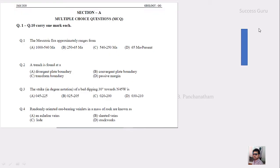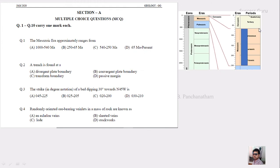The first question is: the Mesozoic era approximately ranges from? If you remember the geological time scale, the Mesozoic era ranges from 250 to 65 million years. So the answer will be option B, 250 to 65 million.